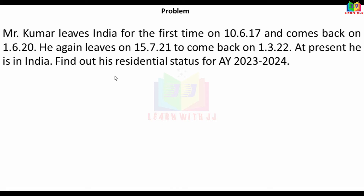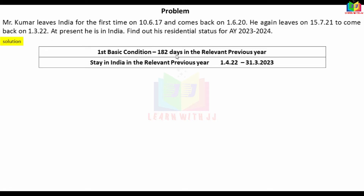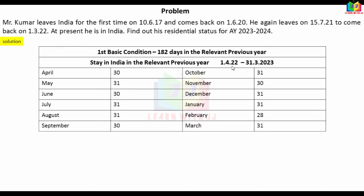The first time he leaves India is 10-6-17 and comes back on 1-6-20. That covers years 17-18, 18-19, and 19-20. Next departure is 15-7-21, which is related to the previous year in Indian income tax. The relevant previous year is 1-4-22 to 31-3-23. Since he is currently in India, we check his days of stay in the previous year.